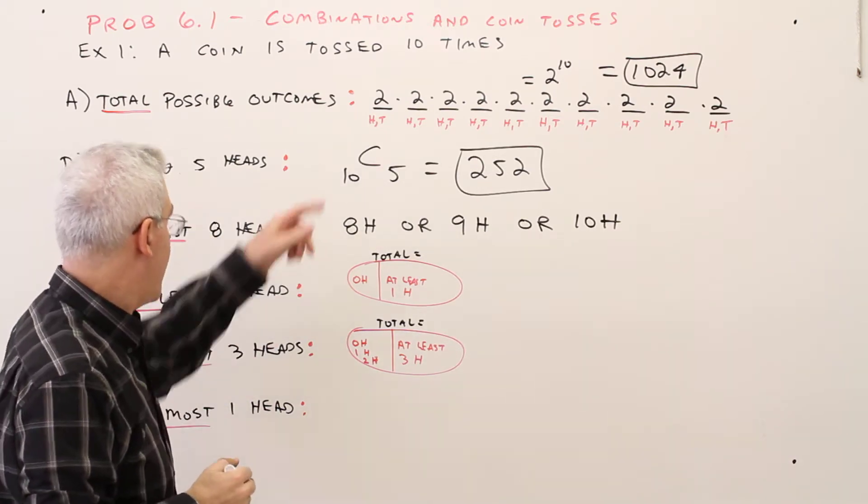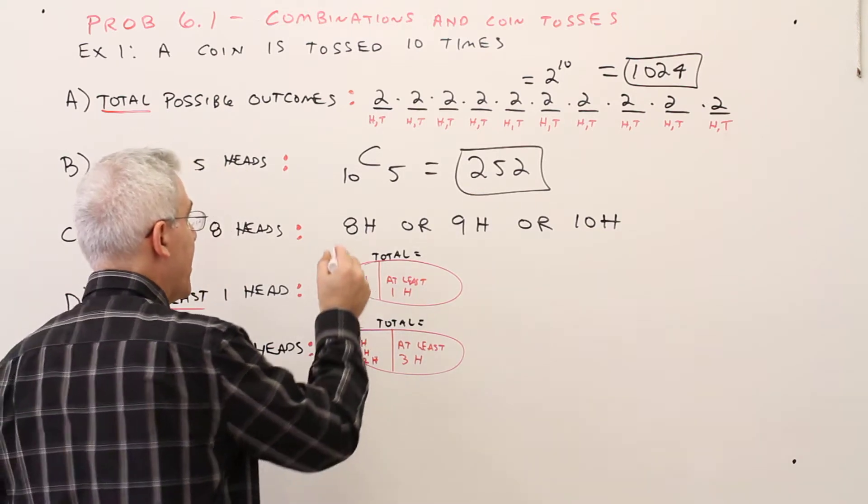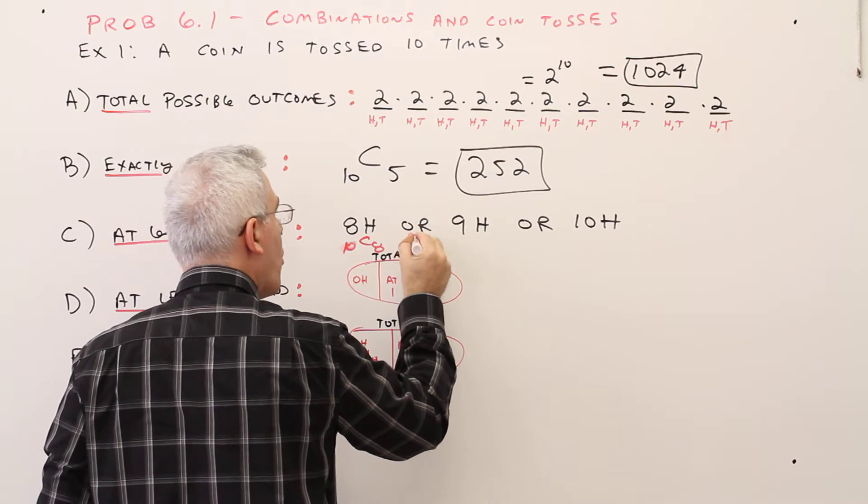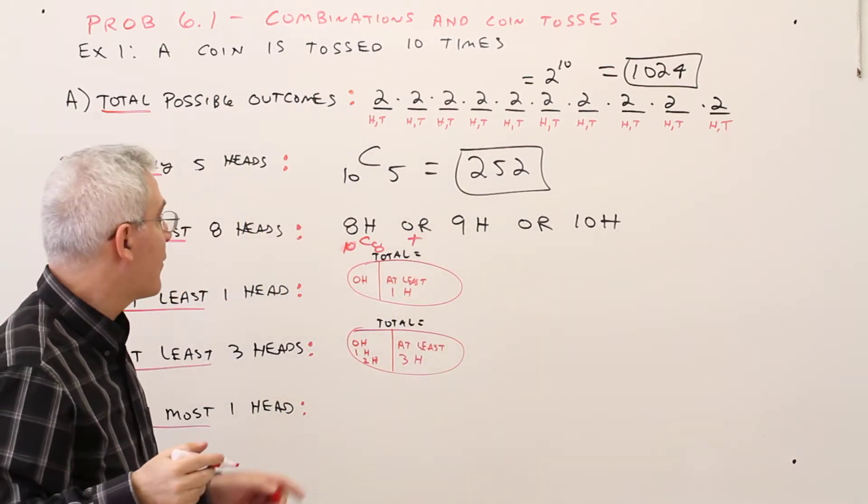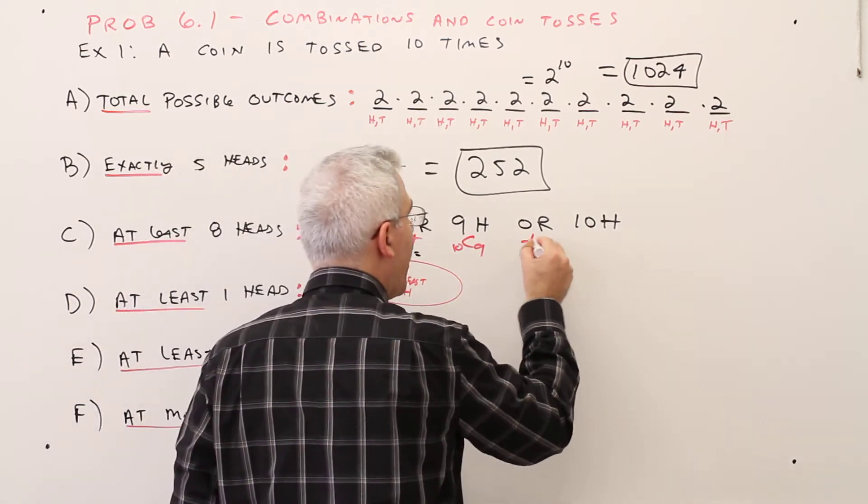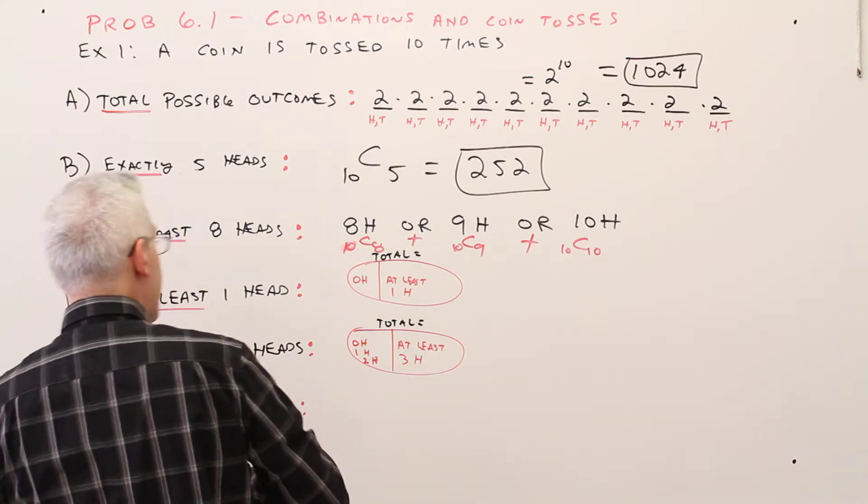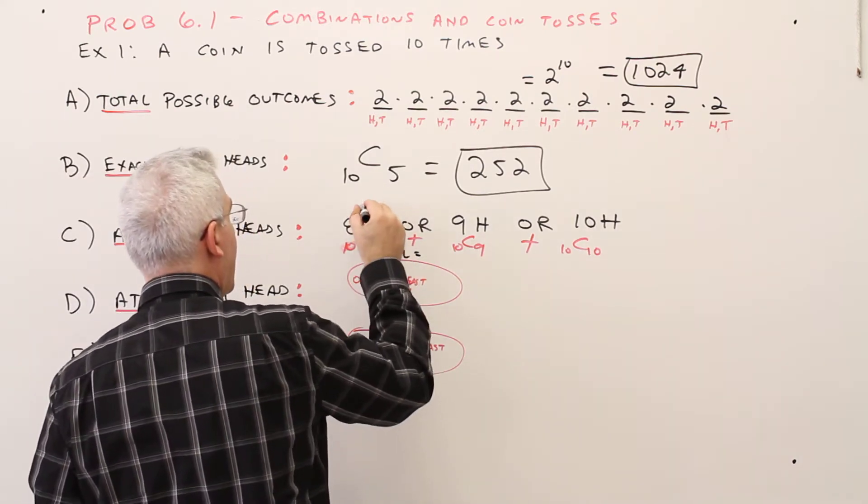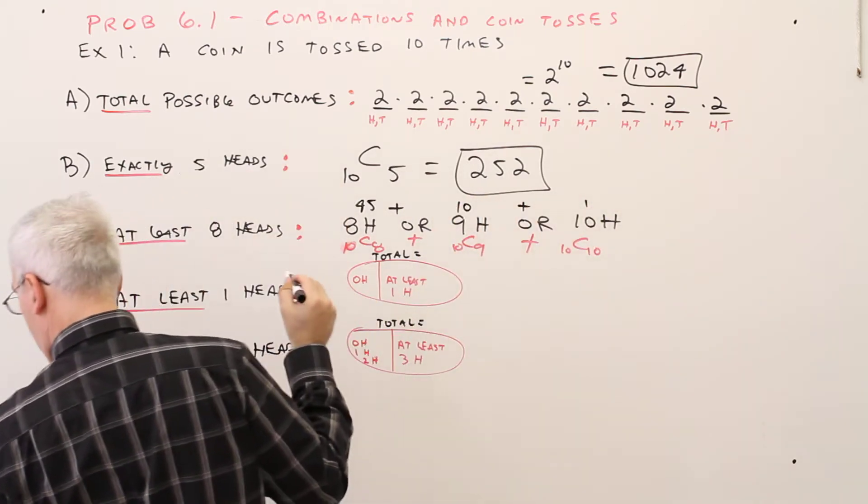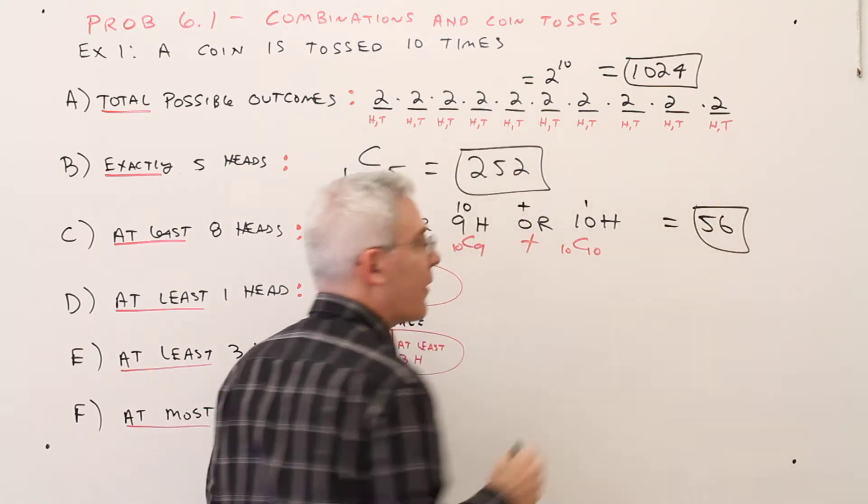So at least 8 heads means we could have 8 heads or 9 heads or 10 heads. So I'm going to use this same principle. To get exactly 8 heads would be 10 choose 8. Or means to add plus, plus 10 choose 9, or means plus, 10 choose 10. And if you compute that, that's really a 45 plus a 10 plus a 1, and we get 56 as our answer.